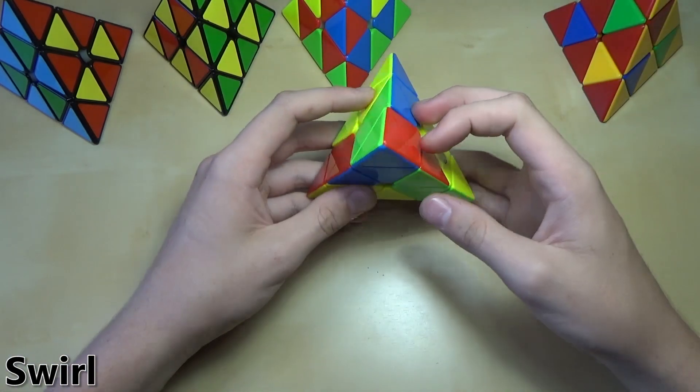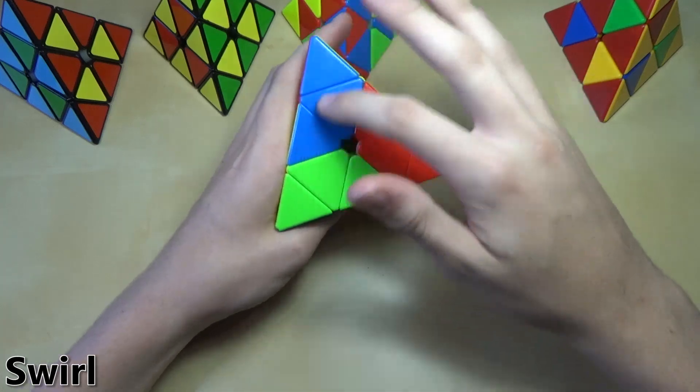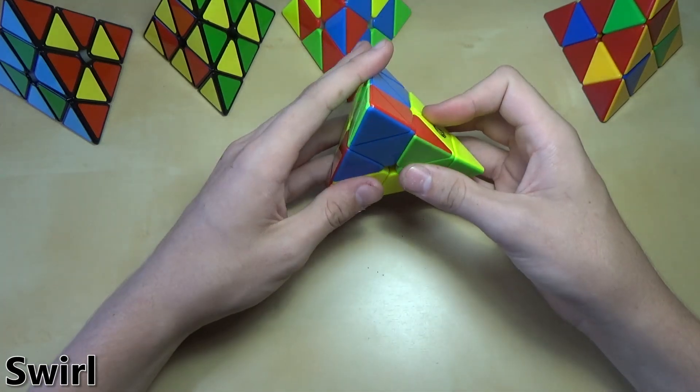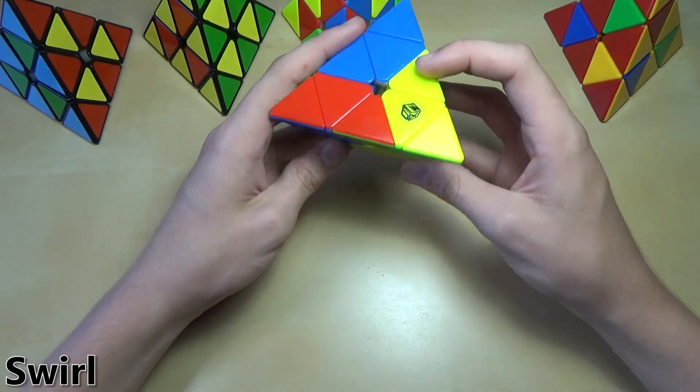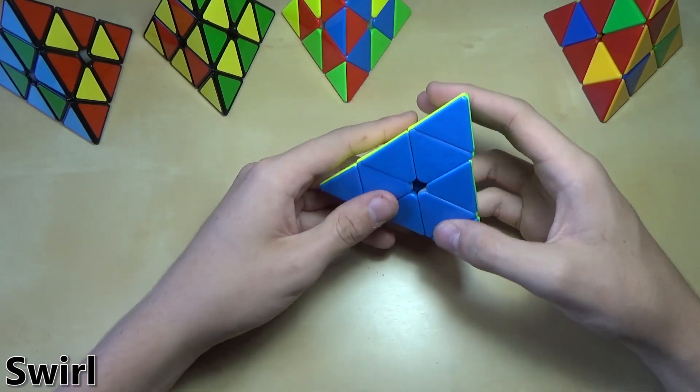Next one, I call this one the swirl. Basically all the colors kind of swirl around in a circle like this on every face. It looks a lot cooler if you look at it one face at a time, but it still does look pretty cool like this. What you want to do for this one is hold it in any orientation.